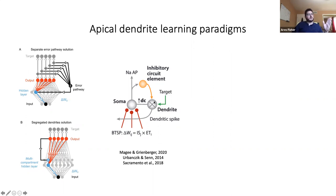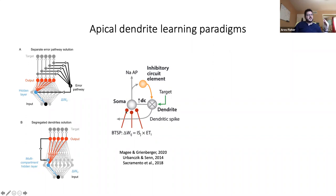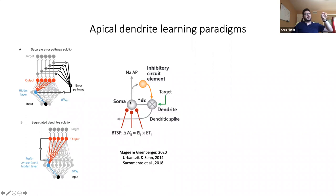In the absence of any dendritic input, the soma would try to go to this reversal potential. But the dendrite, with its plateau and a tight coupling to the soma, has information about the target, and for the soma to go towards the reversal potential — which is like zero activation — it needs to update its weights accordingly. This is a form of predictive coding where the dendritic and somatic potentials are compared, creating a dynamical system that nudges the soma towards zero.